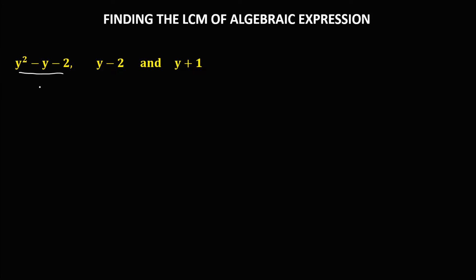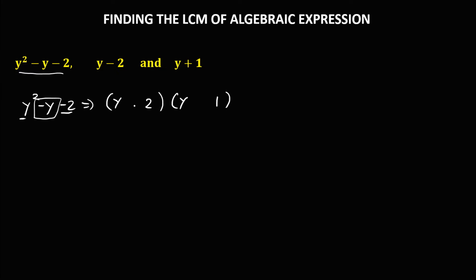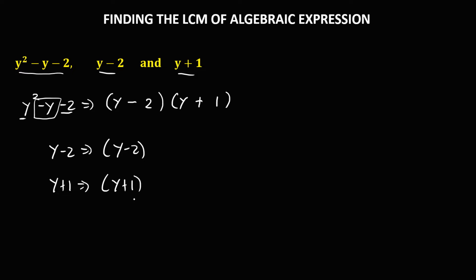For this next given, the quadratic equation is y squared minus y minus 2. To find the factors: y squared is y times y, and for negative 2 that's 2 times 1, one negative and one positive. Since the middle term is negative, the bigger number must be negative. For the second expression, y minus 2, just copy it, and for the third, y plus 1, just copy it. The LCM is (y minus 2)(y plus 1).